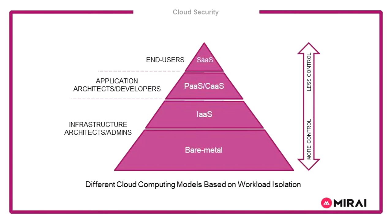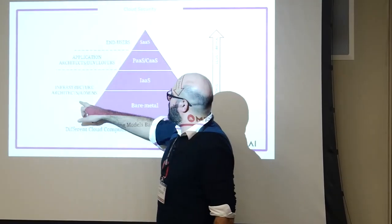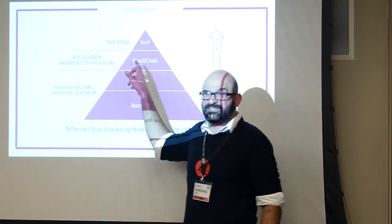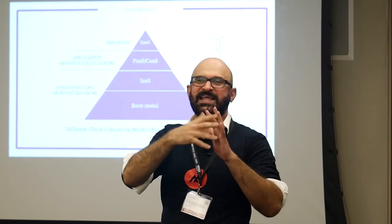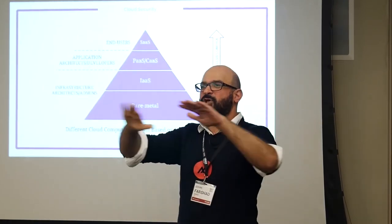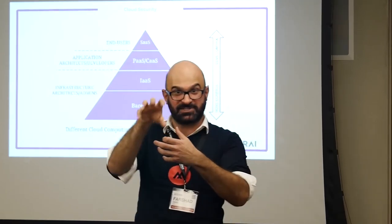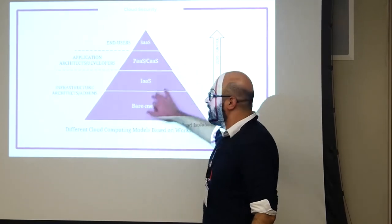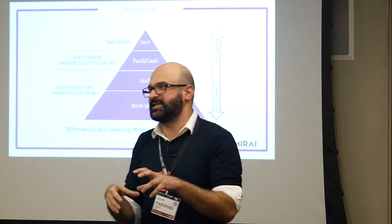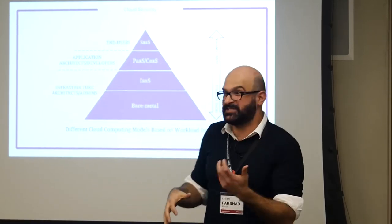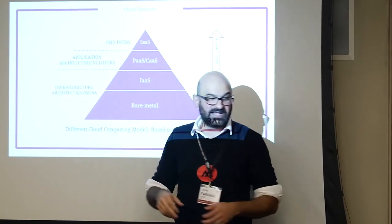Finally, bare metal cloud provides physical separation — if you're concerned about covert channel attacks like the Intel processor covert channel vulnerability, you'd want bare metal. Organizations like the US military or FBI with highly confidential information can still use cloud via bare metal, where a dedicated set of hardware is yours alone, not shared with others, though it's still abstracted. There's a one-to-one mapping between virtual machines and dedicated physical hardware. With SaaS you have less control, and with bare metal more control. End users are involved at SaaS, application architects and developers at PaaS, and infrastructure architects or administrators at IaaS and bare metal.